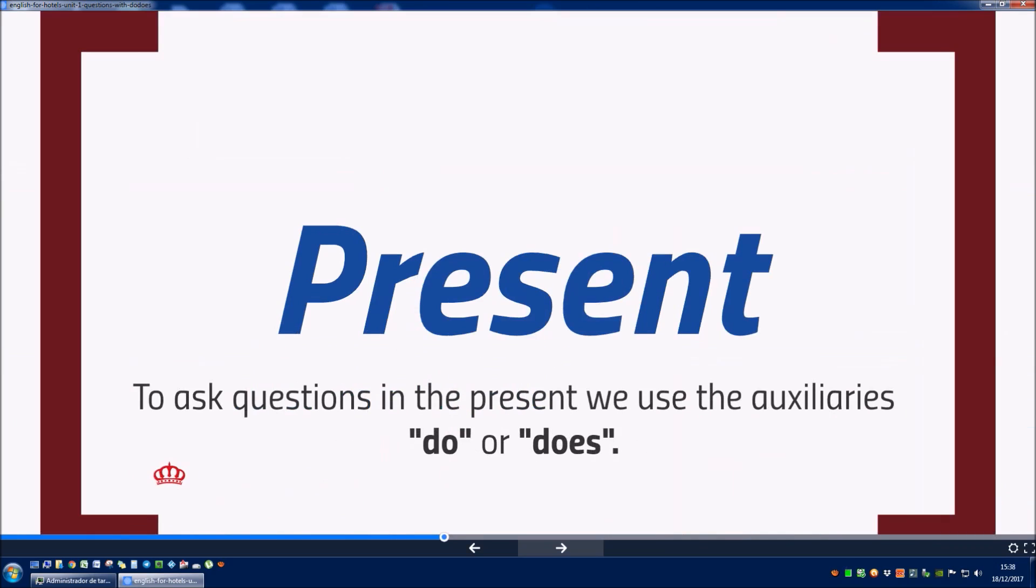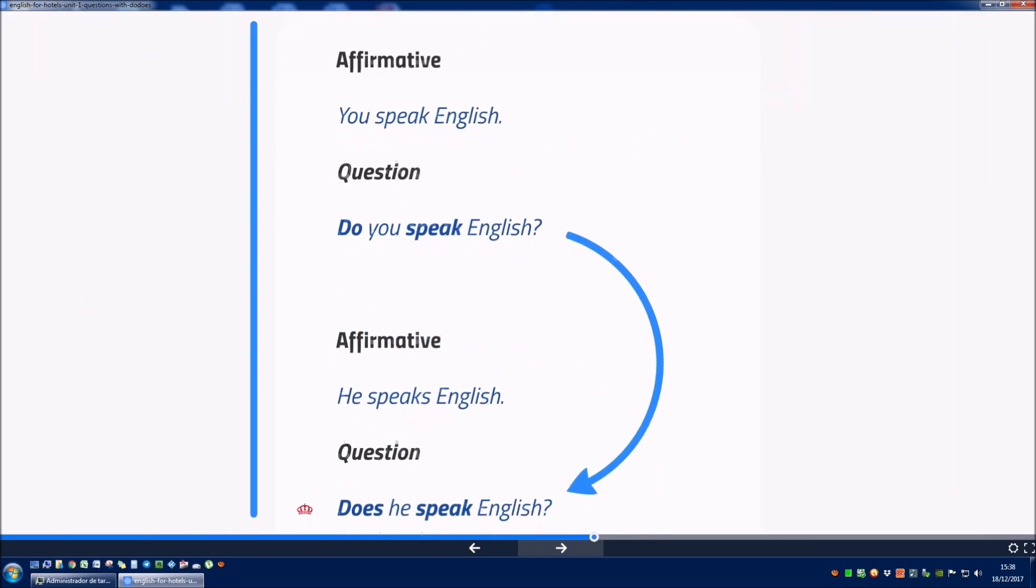Present: To ask questions in the present, we use the auxiliaries DO or DOES. Examples: Affirmative sentence: You speak English. Question: Do you speak English? Affirmative sentence: He speaks English. Question: Does he speak English?